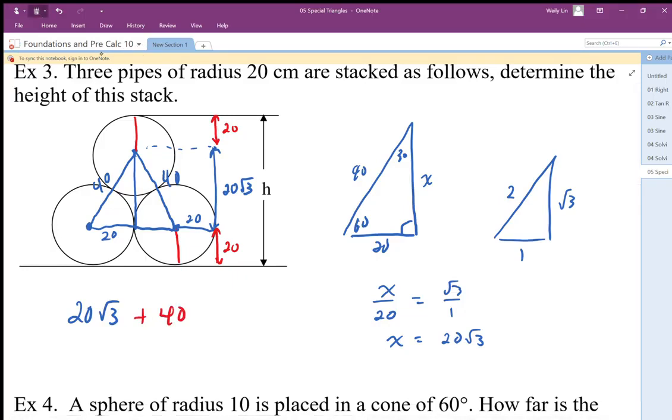We don't try to mess with this. We can work out a decimal value here, but this is the solution we want in exact values. This is approximately equal to, if I type this into my calculator, I get 20 square root 3 plus 40, and that gives me about 74.64.